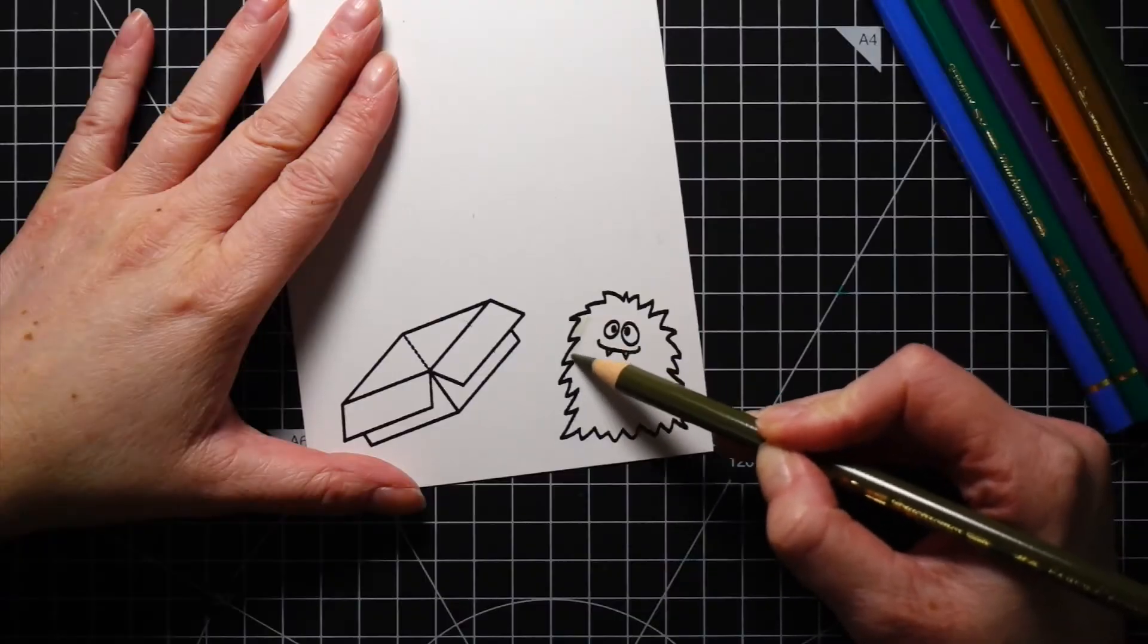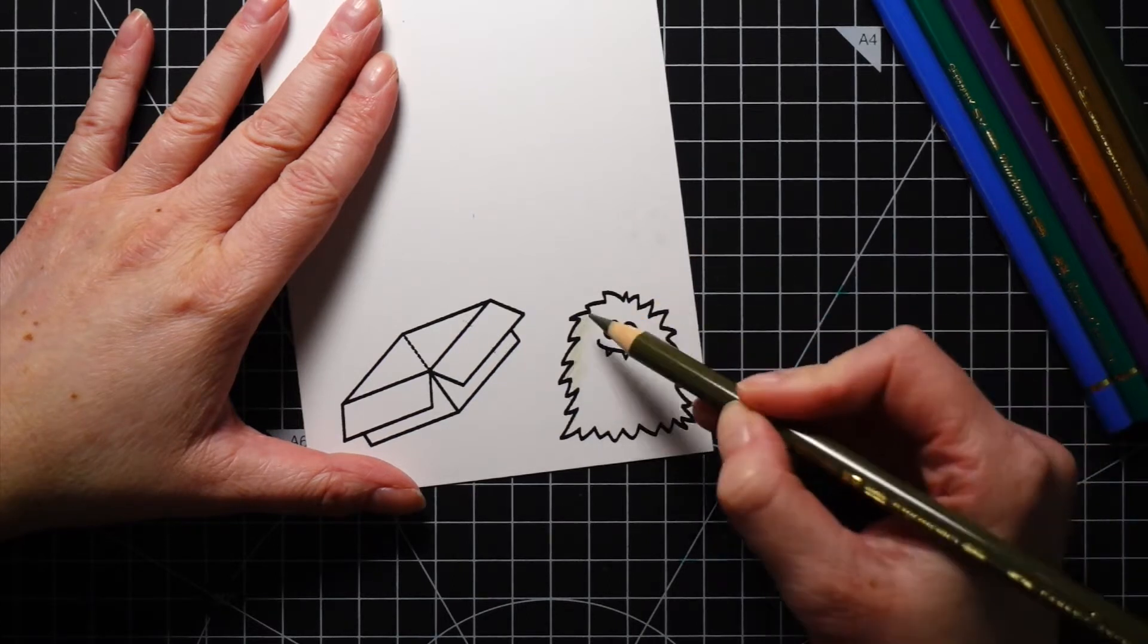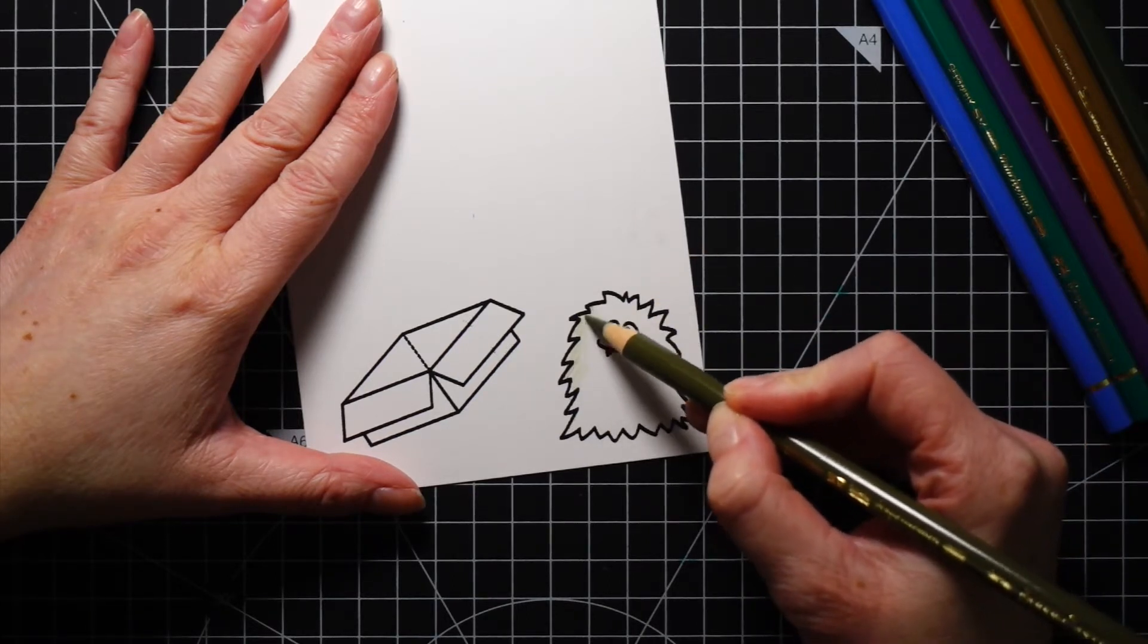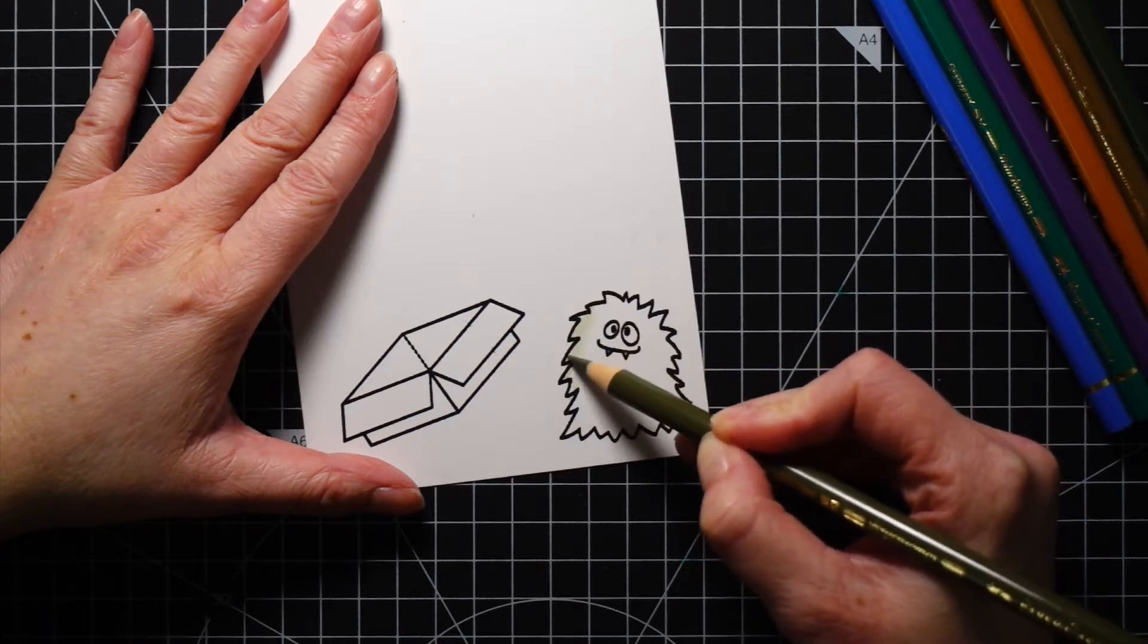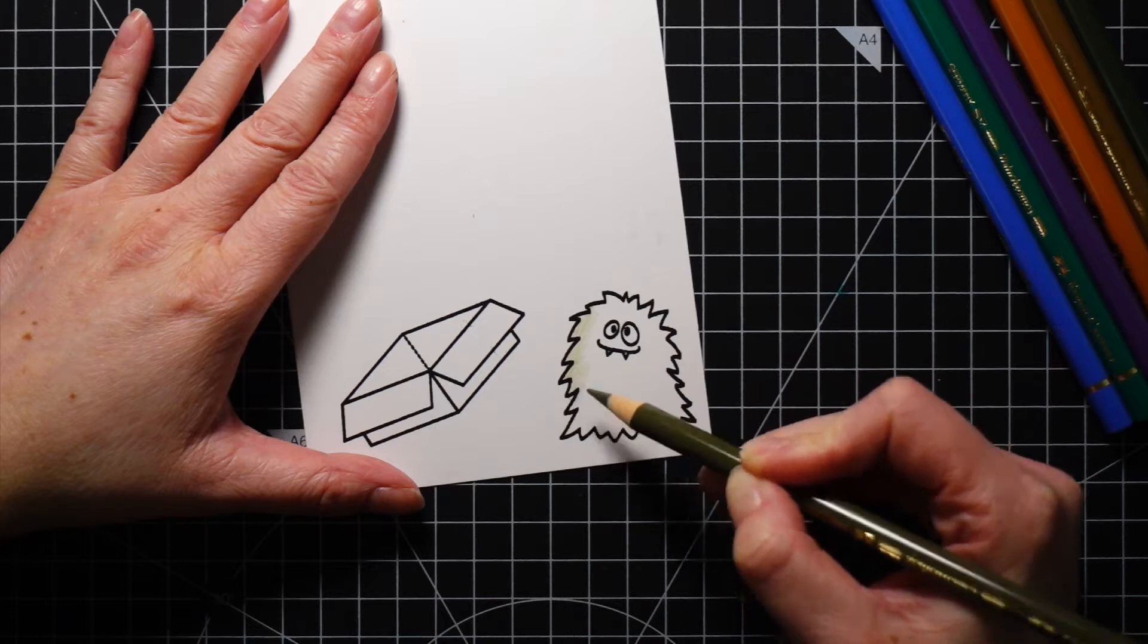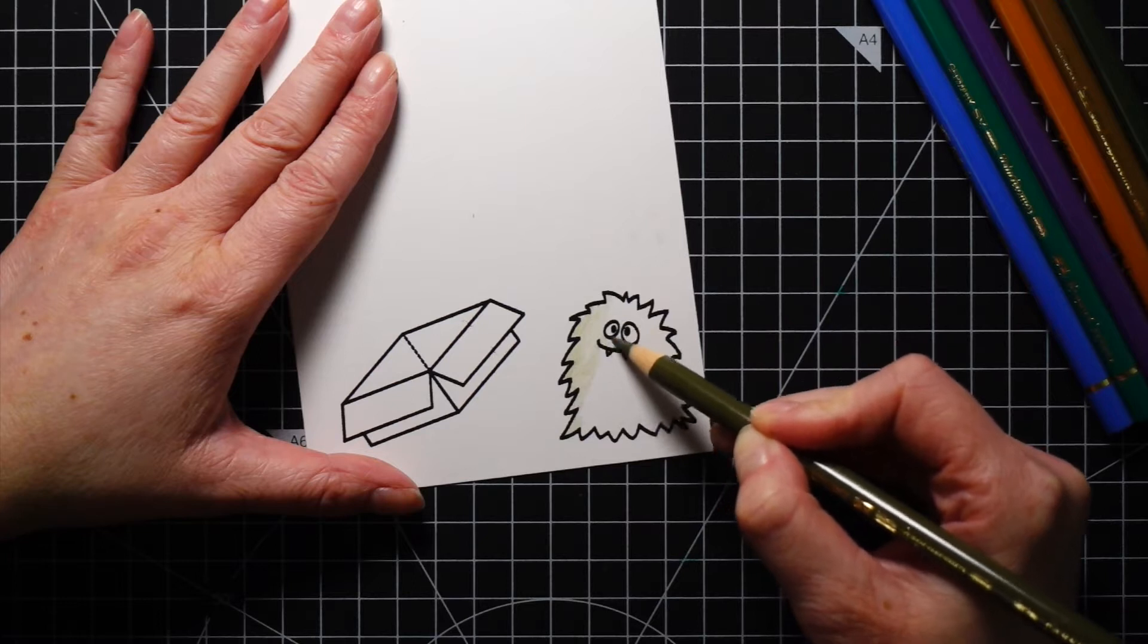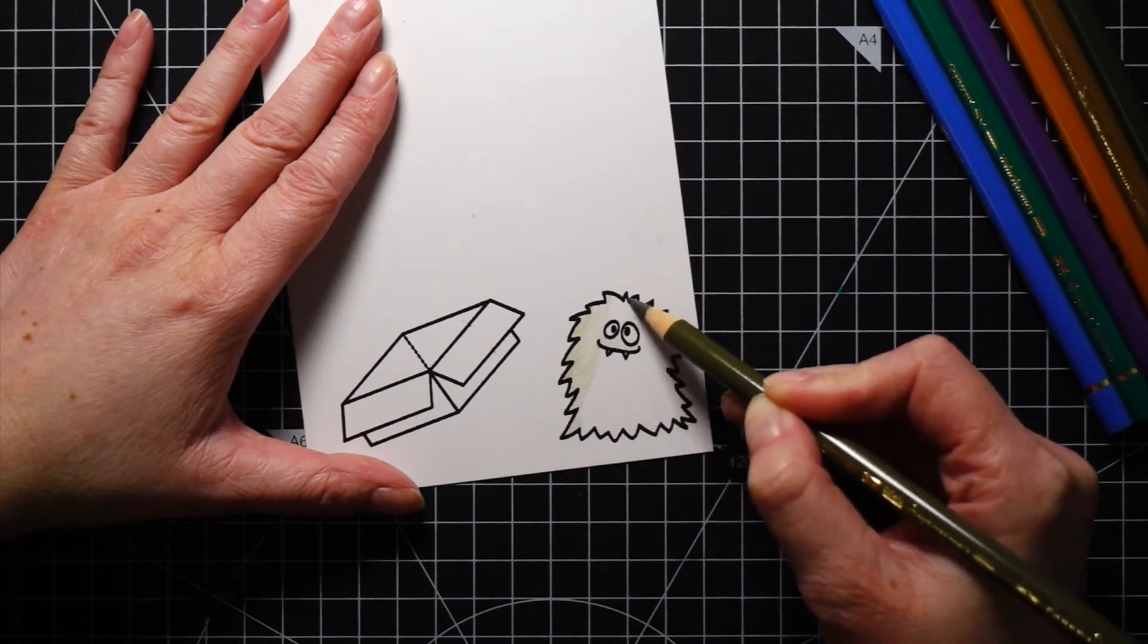Next I started coloring. I picked colors of pencils I thought will fit well together. I'm using here the Faber-Castell Polychromos. I picked two shades of green for the monster and beige for the box, but I'm not going to do anything complicated or over-detailed. Therefore you don't need any fancy coloring pencils. It doesn't really matter here.